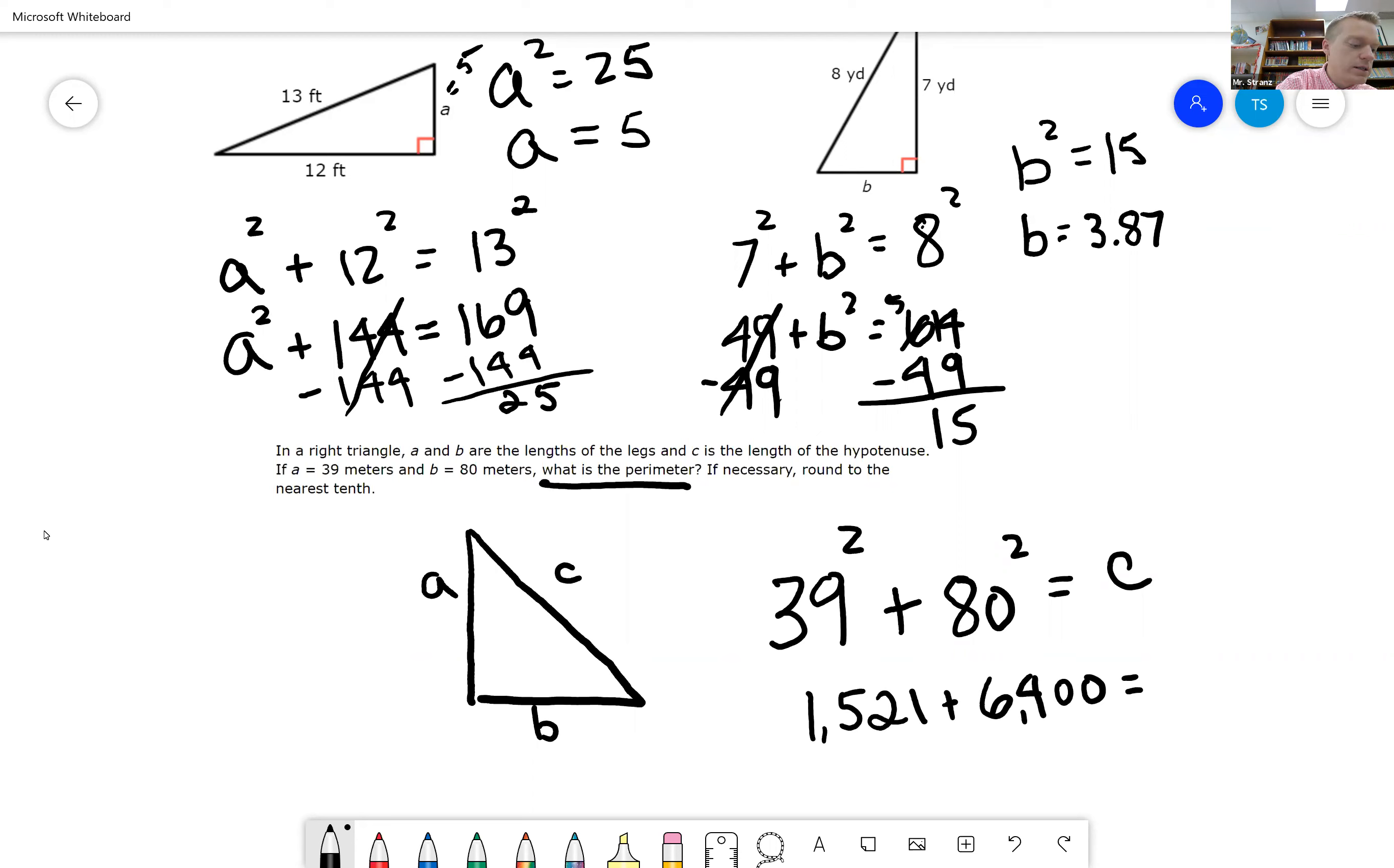And we need to see what C is going to be. So that is going to equal 7921. C squared. So 7921, the square root of that, is going to be 89. So we know C equals 89.